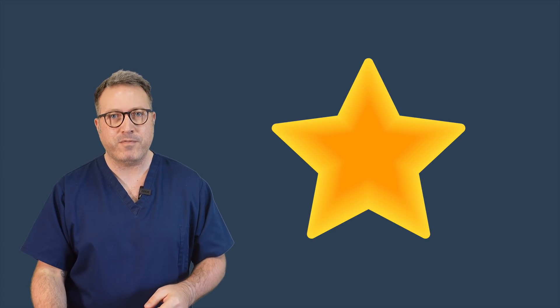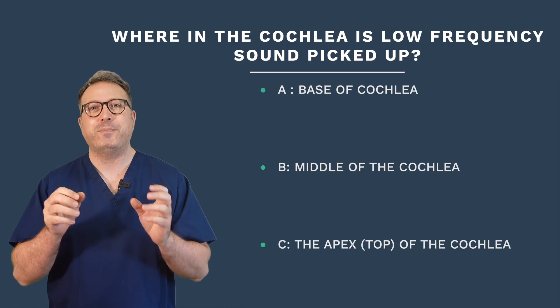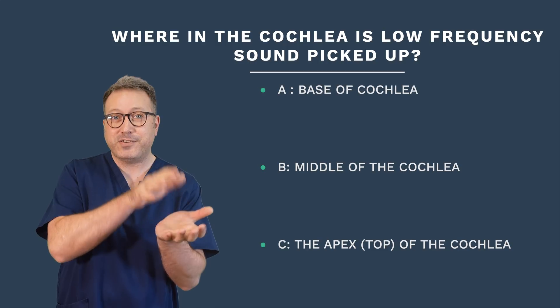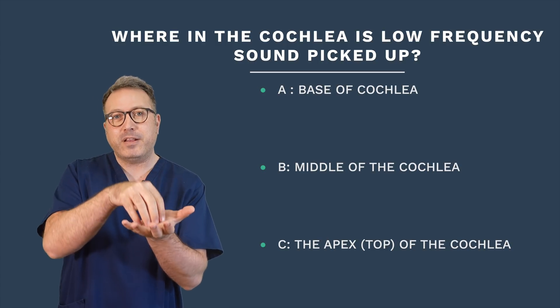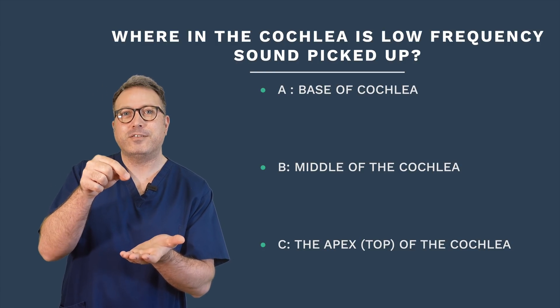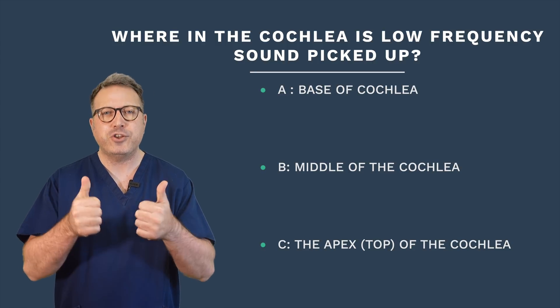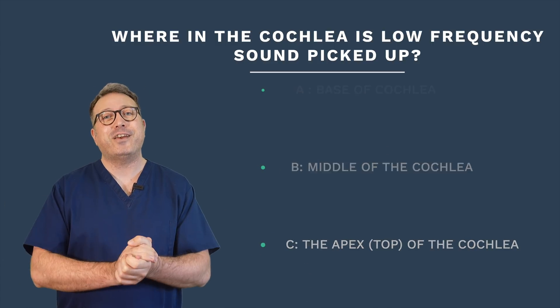Quiz time! I'm going to ask you a question with a multiple choice answer. The first three people to answer correctly in the comment section below will get a shout out and a gold star in next week's video. Your question is: where in the cochlea is low frequency sound picked up? Is it A) at the base — the entrance of the cochlea, B) in the middle section of the cochlea, or C) at the apex — the very top part of the cochlea? Post your answers in the comment section below. All the best, take care of yourselves, and we'll see you next week for your next video and tomorrow for your earwax removal video. Take care everyone!